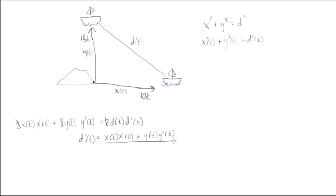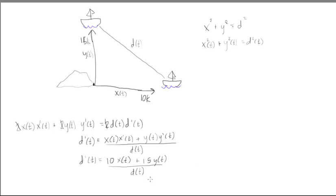And this is going to be all over d(t). And we do know what y'(t) and x'(t) were. Those are the 10 and the 15 knots. So let's just put that in to clean it up a little bit more. We'll get d'(t) is equal to 10 times x(t) plus 15 times y(t), and this is all over d(t).